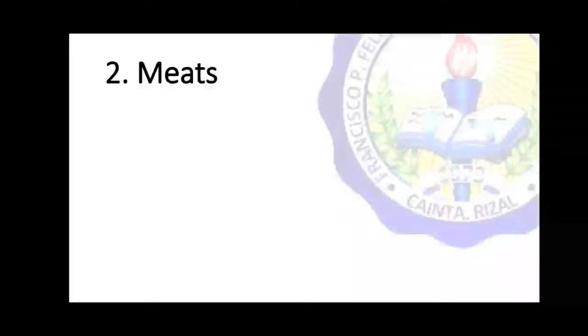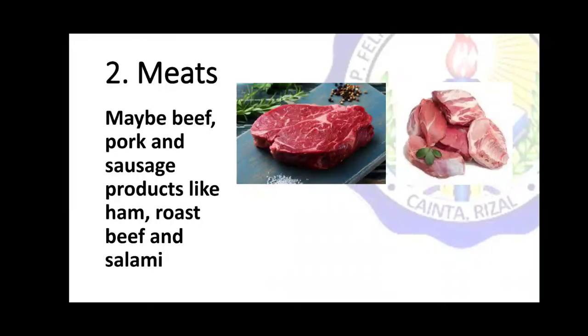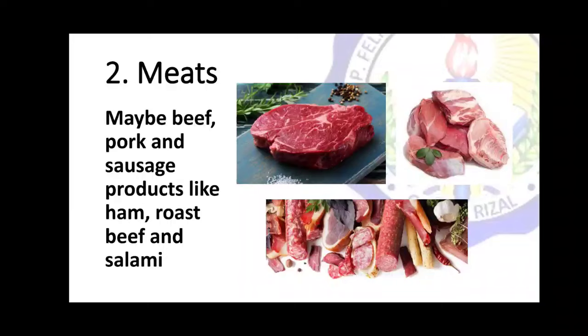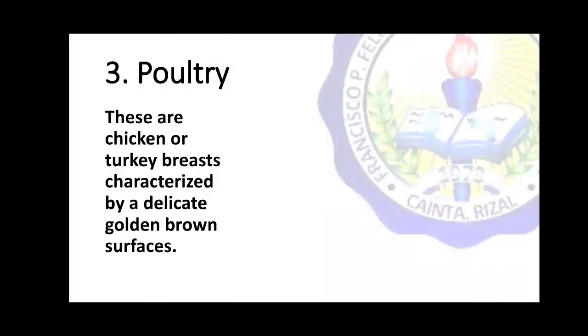Next we have meats, which may be beef, pork, and sausage products like ham, roast beef, and salami. Number three, we have poultry — these are chicken or turkey breast, characterized by a delicate golden brown surface.